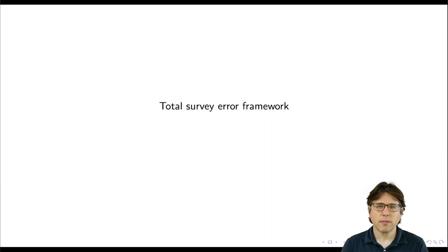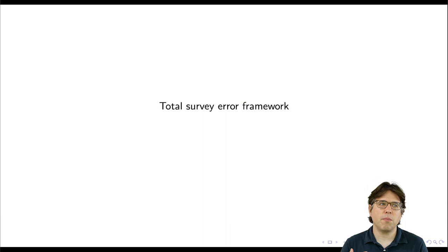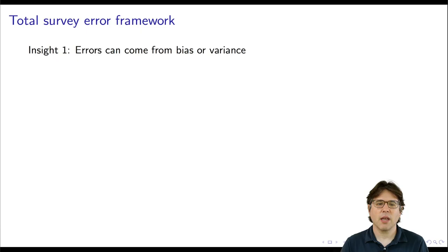Before discussing that further, I want to talk about one very important idea from the first two waves of survey research that carries over well into the third era: the total survey error framework. It's basically an entire framework for thinking about all the things that can go wrong in surveys. It helps researchers organize concerns and make trade-offs — often we want the smallest possible error for a given cost budget. There are two main insights from the total survey error framework.